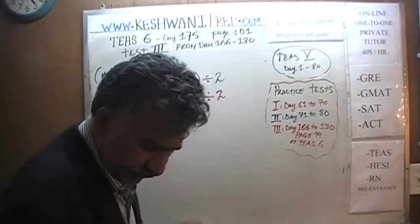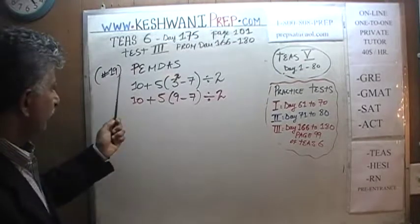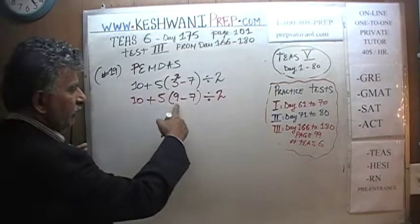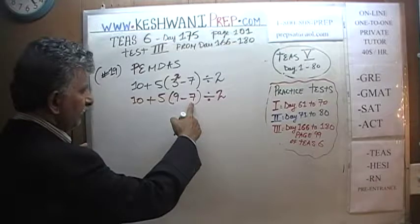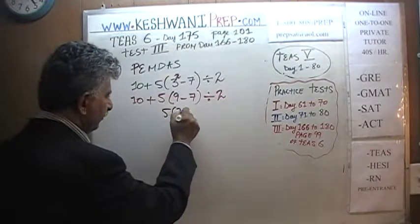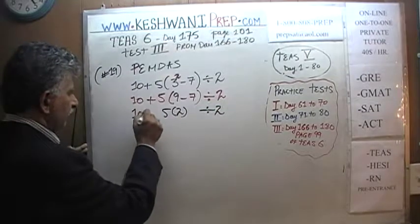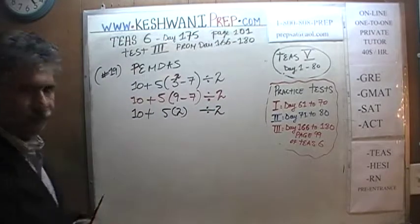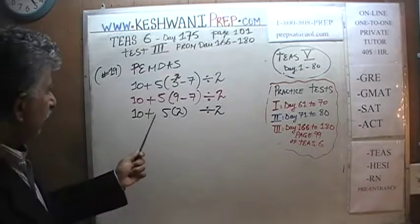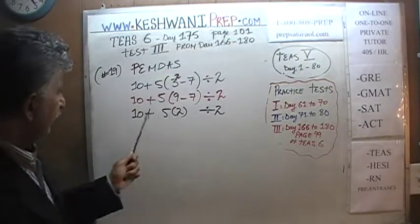Now we open the parenthesis. P stands for parenthesis — let's open this thing. Before we open it we can figure out what that is: 9 minus 7 is 2. So we get 5 times 2, and then this comes down divided by 2, and the 10 just comes down. Now we have to do the multiplication and then division. Multiplication is right here — let's take care of that.